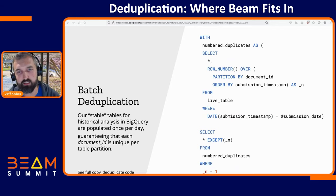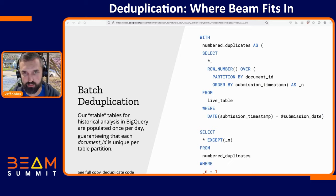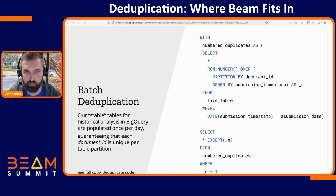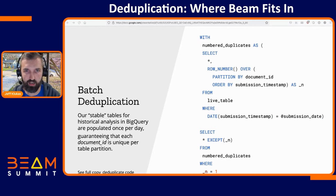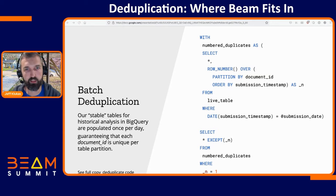Let me show you how we do that stronger guarantee. On the right of this slide is BigQuery standard SQL. In the middle of that query we're reading from something we call a live table — that's what our Beam pipeline loads into roughly every 10 minutes. We use this overall query to read from the live table and populate something we call the stable table for that document type.